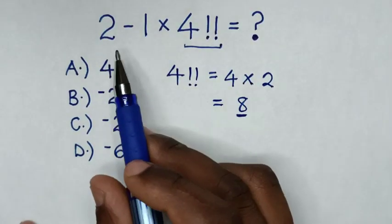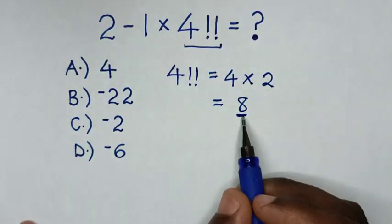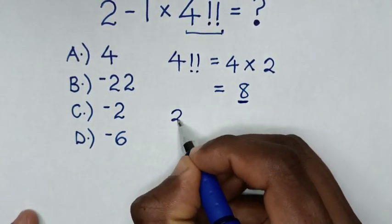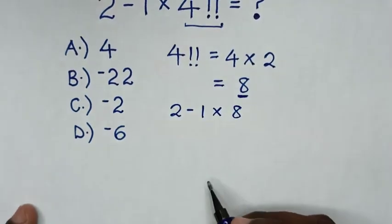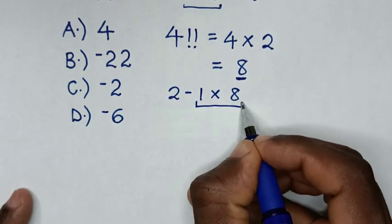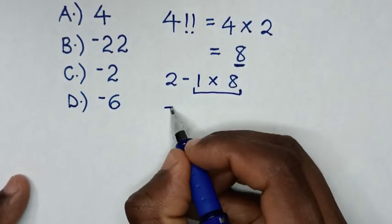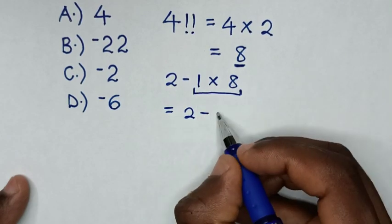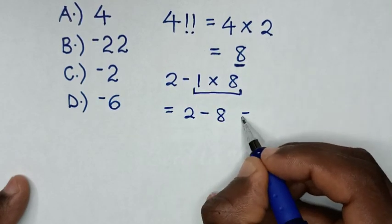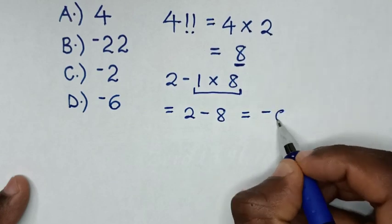Then the expression will be 2 minus 1 times 8. So from 2 minus 1 times 8, then we'll deal with this multiplication. So it will be equal to 2 minus 1 times 8 is 8. Then it will be equal to negative 6.